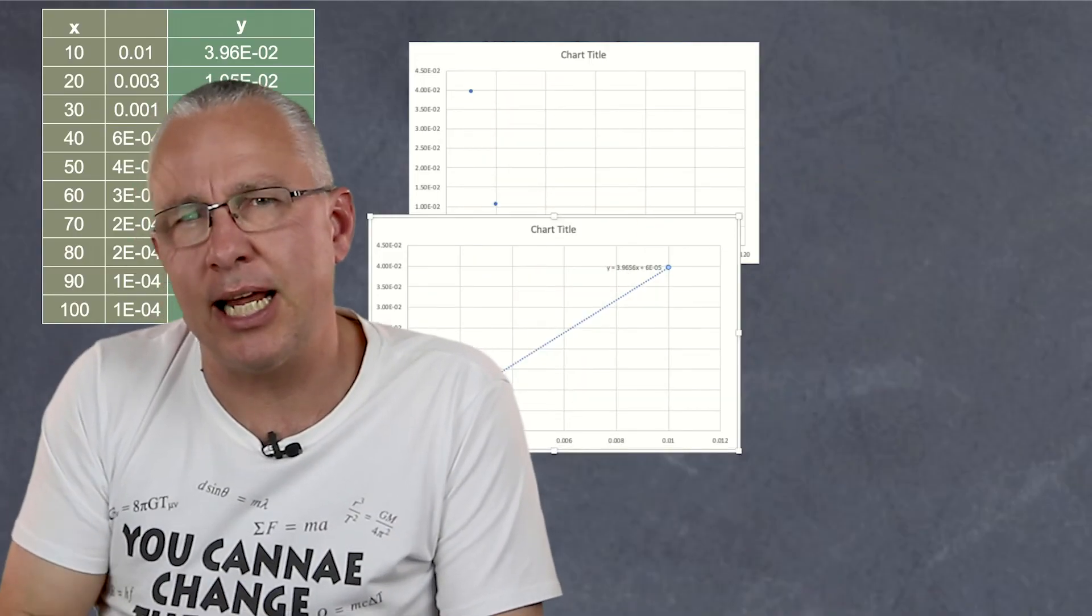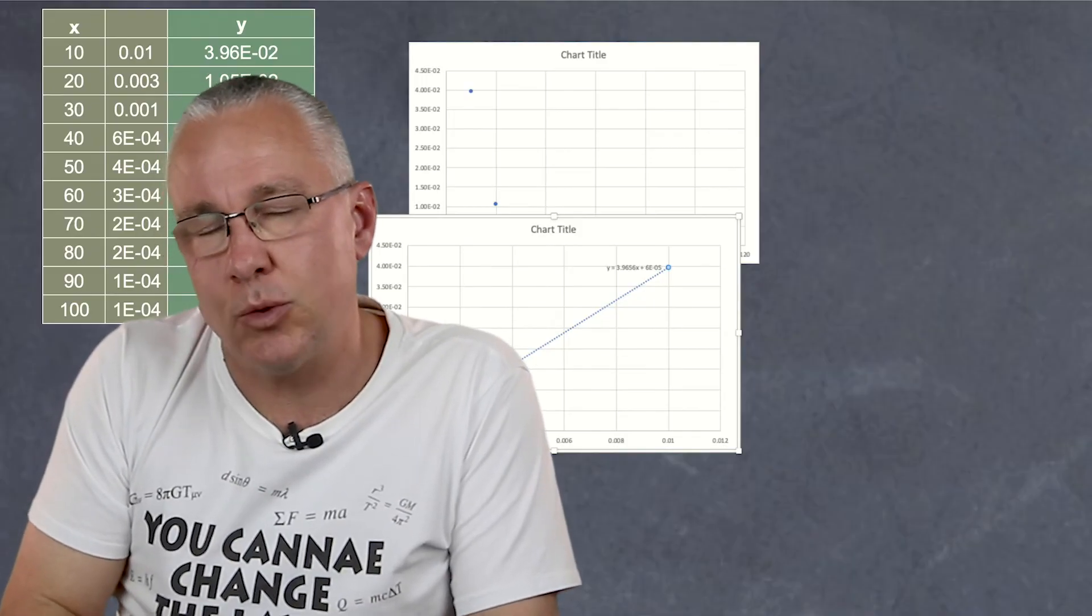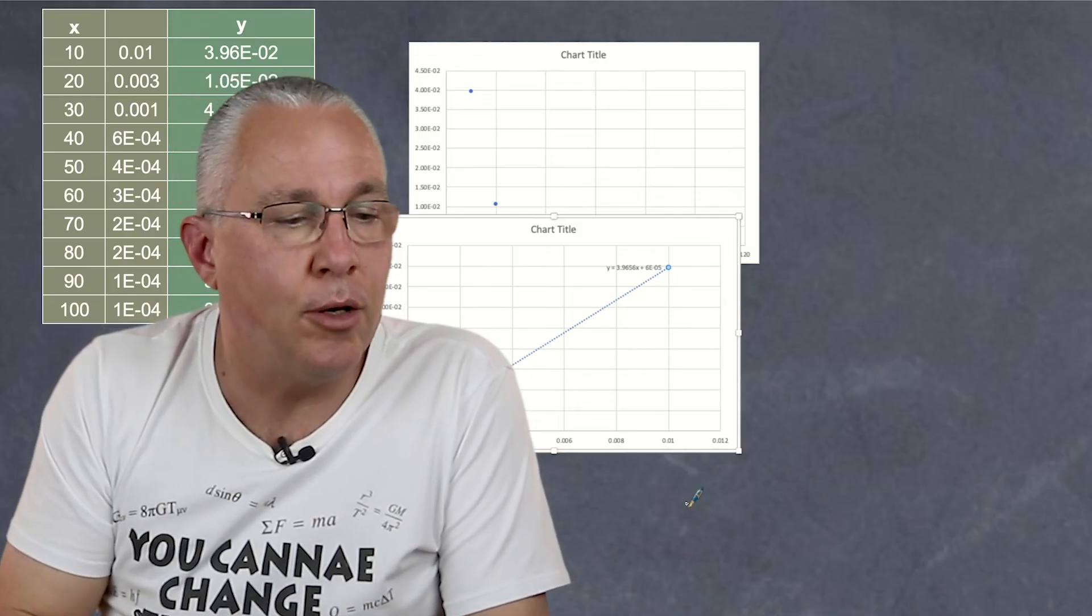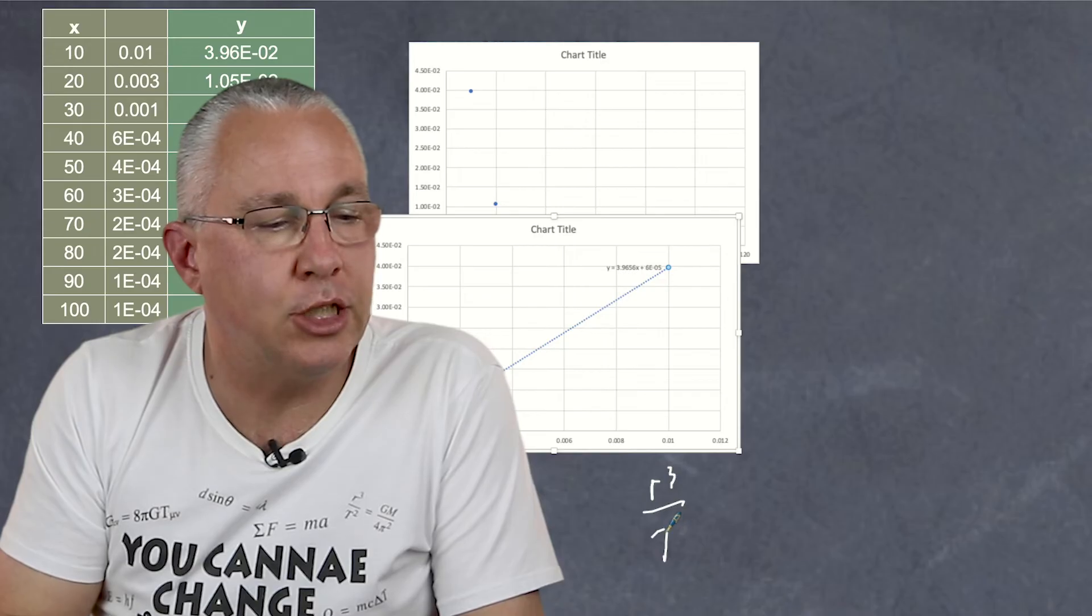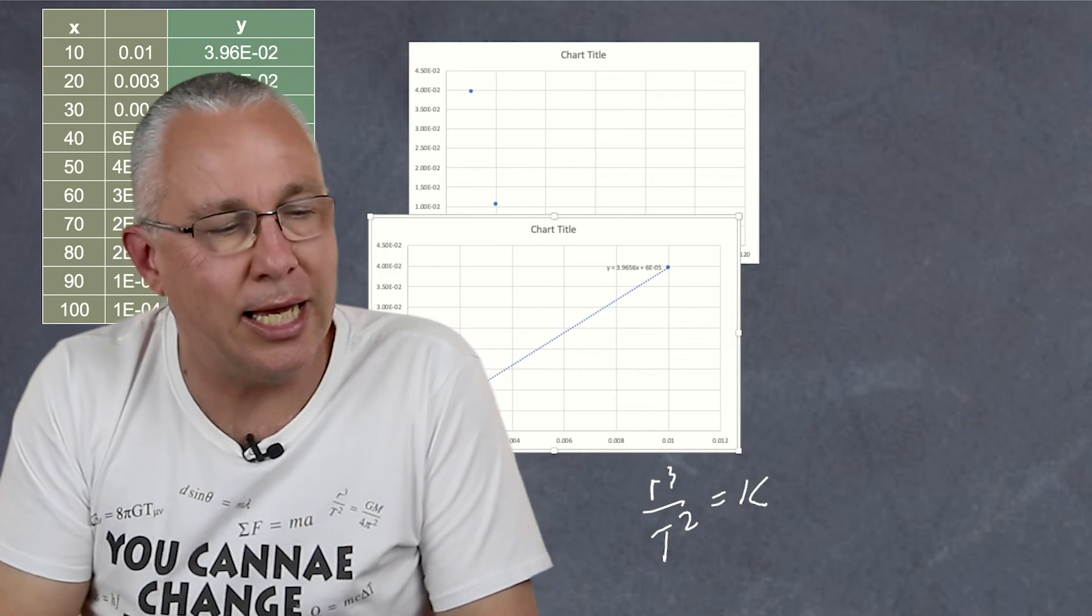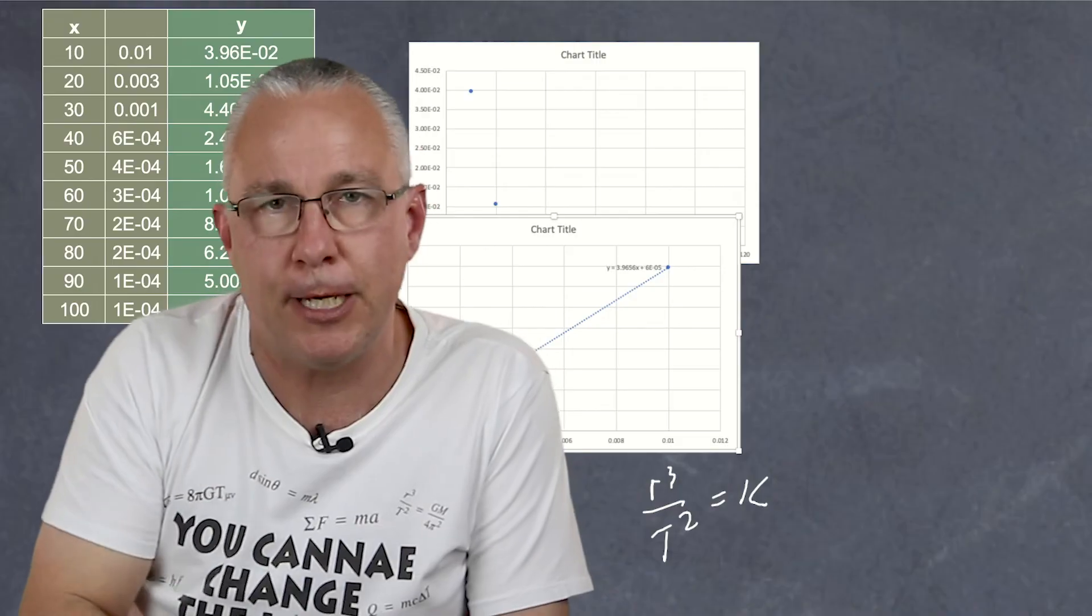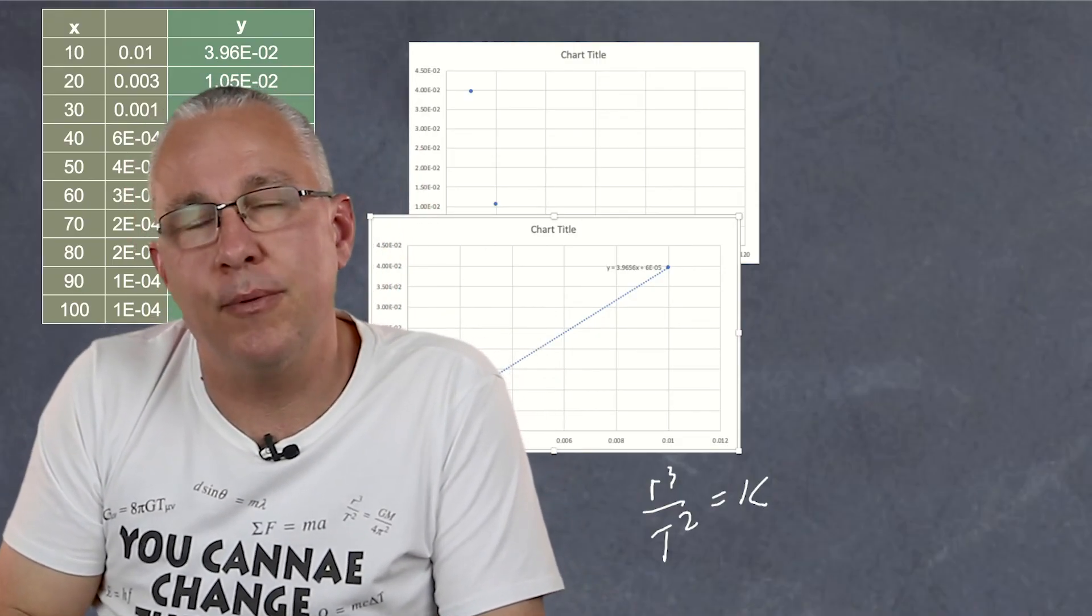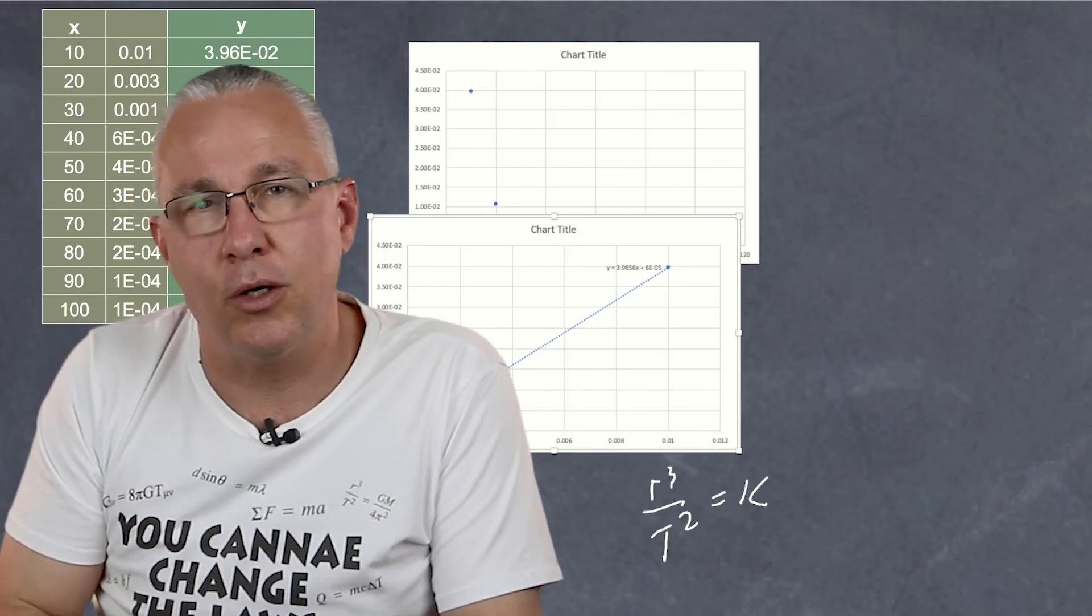So that's linearizing data. Now I've used simple polynomial or power relationships here but there are other ones as well. So for example Kepler with his Kepler's law which said basically that R cubed over T squared is a constant. Well he would have had to cube the radius and square the period in order to establish the mathematical relationship. If you were to look at half-lives in that case your linearizing data would require you to use exponentials and logarithms.